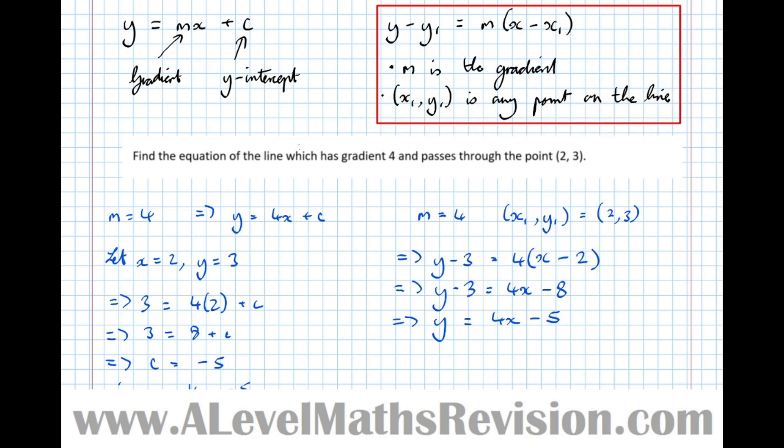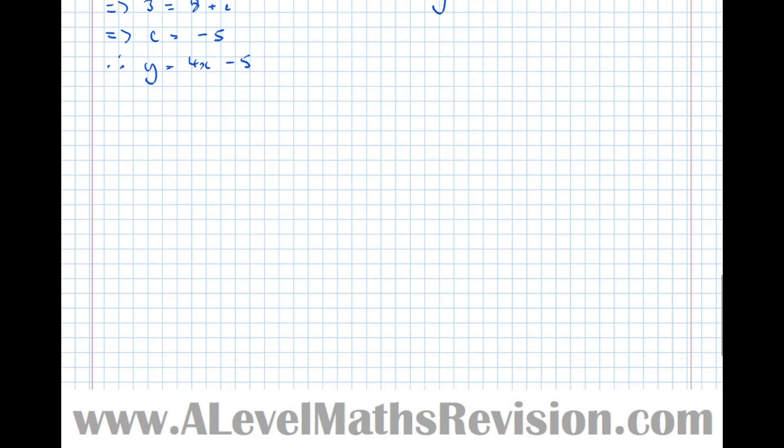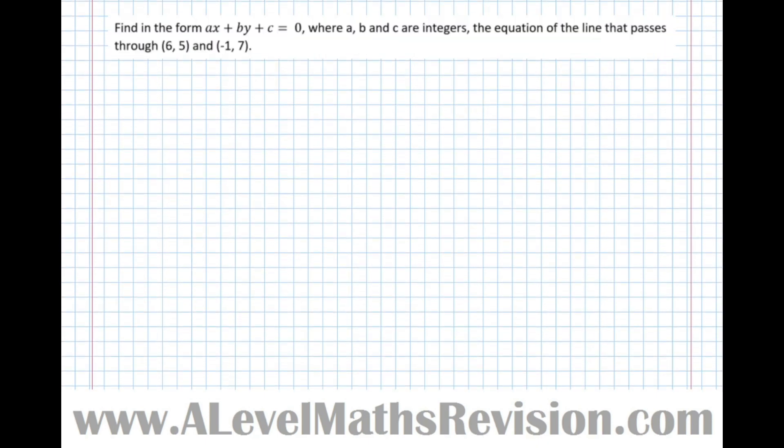I'll give you another example of why it's far superior. This question: find in the form ax plus by plus c equals 0, where a, b and c are integers, the equation of the line that passes through 6, 5 and minus 1, 7. This looks a bit new because normally you've given equations in the form y equals mx plus c, but sometimes at A-Level it's preferred to have it in this format here. Remember, we write the answer in this form, not y equals mx plus c.